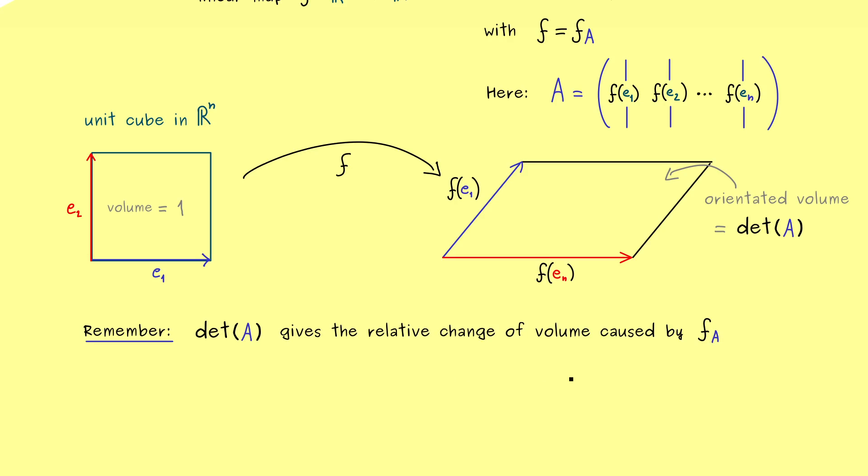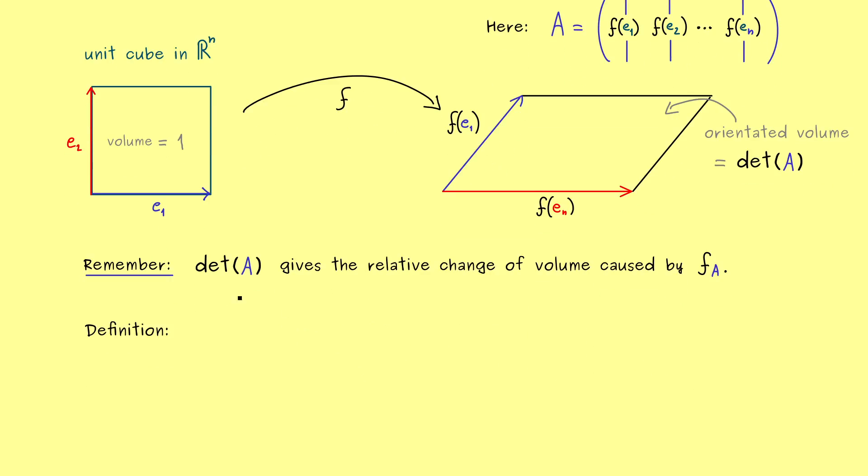And I would say this is such an important fact that we can immediately write that down. So in one sentence we say: determinant of A gives the relative change of volume caused by the linear map f_A.